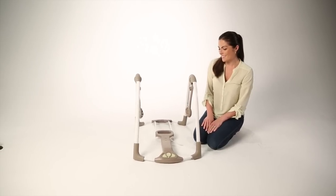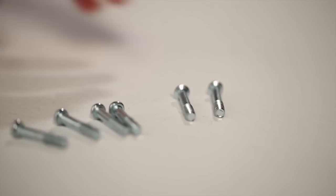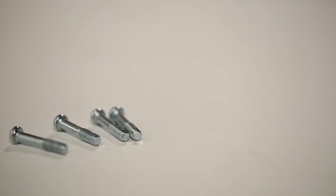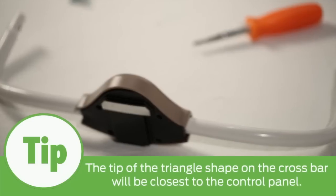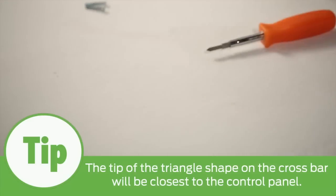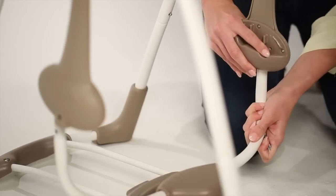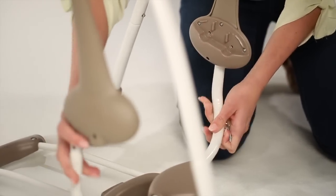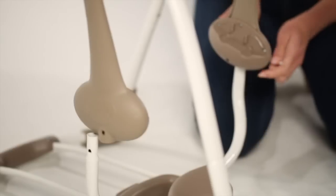Now, locate the two longest screws provided to connect the crossbar into the bottom of the now swinging ends of the right and left swing frame. Tip: The tip of the triangle shape on the crossbar will be closest to the control panel. The right side tube has an indented end. Make sure this end is inserted into the right side as you are facing the swing.